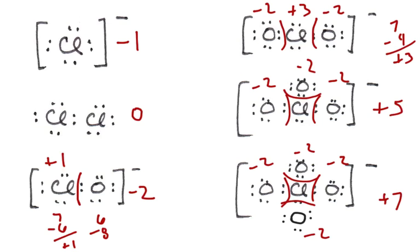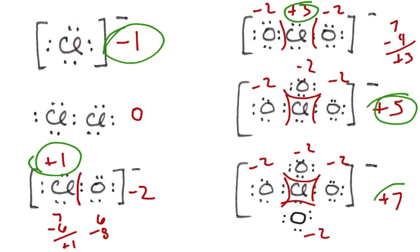Two things to notice: these oxidation states go up by 2's — negative 1, plus 1, plus 3, plus 5, plus 7 — because every time we give away a pair of electrons to the other atom, the oxidation number changes by 2. Also notice that chlorine's highest oxidation state equals its column number in the periodic table. Because it has 7 valence electrons, in the last case it has given away all 7 to oxygen — that's the highest oxidation state possible. For example, sulfur in family 6 has a highest oxidation number of 6; nitrogen would be 5.